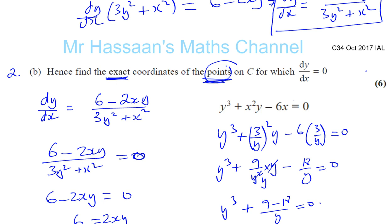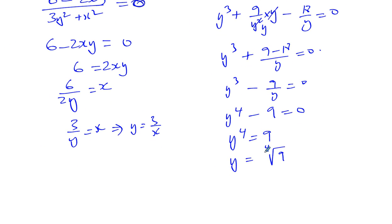So y equals the fourth root of 9. You're finding the fourth root, which is an even root, and the question says points plural. This is where that comes in - there's a positive and negative possibility for answers.